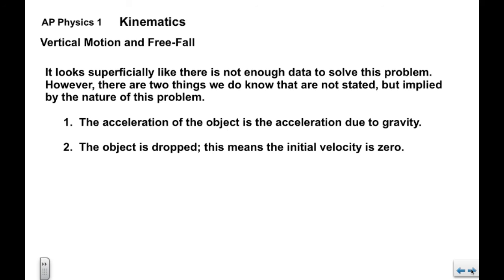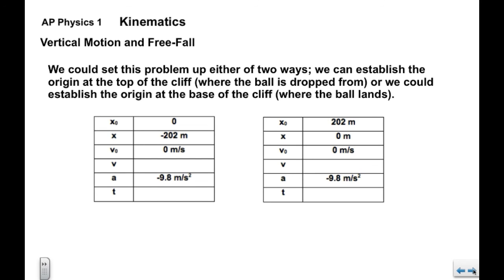So superficially it might look like you only have one piece of data and there's not enough to solve the problem. There are two things we do know that are not stated but implied by the nature of a free fall problem. First of all, the acceleration of the object is the acceleration due to gravity, therefore negative 9.8 meters per second squared. And two, the object is dropped. This means that the initial velocity is zero. Any time an object is dropped its initial velocity is zero.